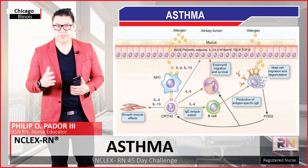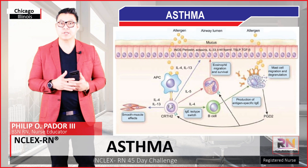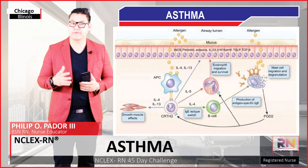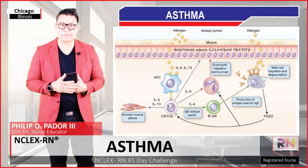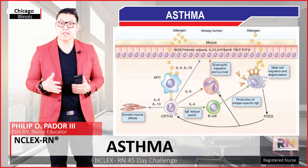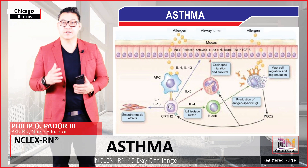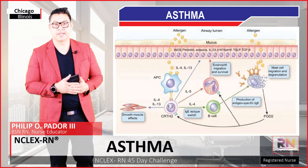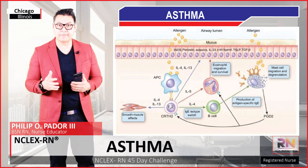Another important function of T-helper 2 cells is that they stimulate eosinophil production from the bone marrow through interleukin 5. Interleukin 5 will stimulate eosinophil production, so you get more eosinophils. With more eosinophils, there is a chemotactic effect occurring which attracts the eosinophils to the area — to the lungs — resulting in increased eosinophil amounts in the lungs.